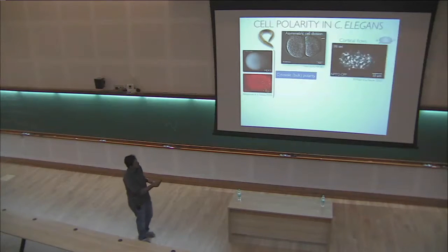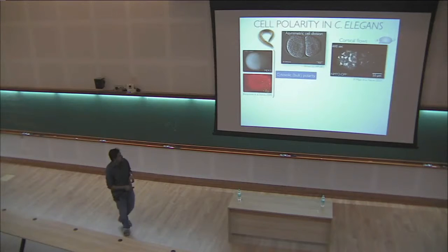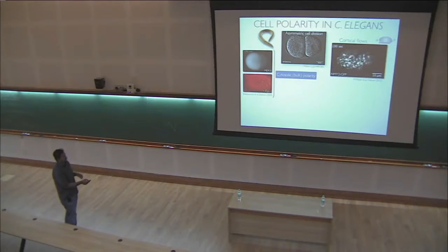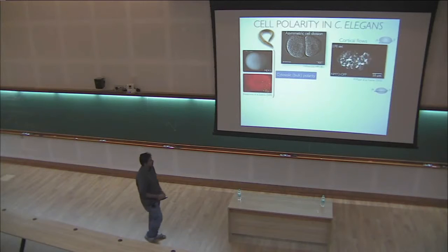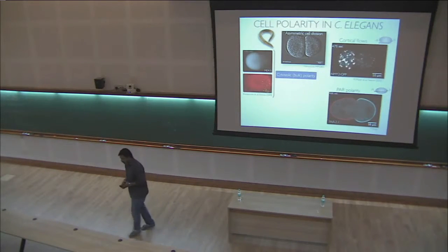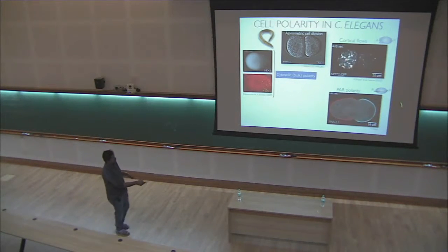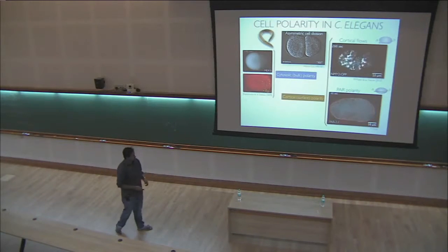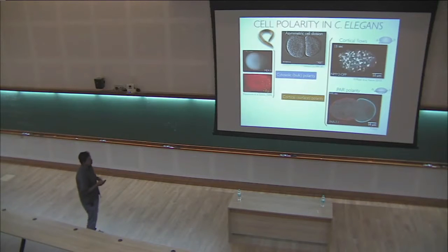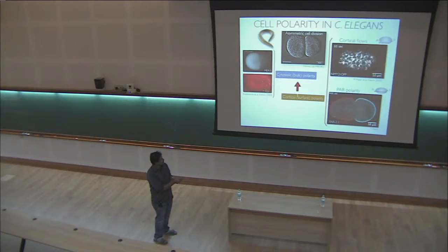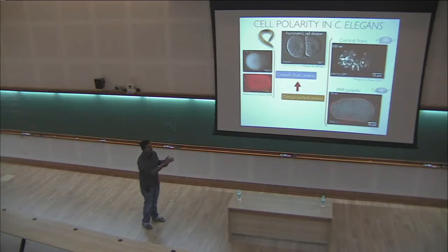At the surface of the cell there is a thin actin-myosin meshwork called the actin-myosin cortex. Looking at the bottom half in a confocal image with myosin labelled, you see flows happening on the surface — cortical flows. Myosin flows consistently from the right to the left side. At the same time, certain chemicals at the mid-plane establish a polarity pattern: starting from a uniform red surface, a blue patch appears, and finally a domain gets established. This surface polarity is what dictates polarity in the bulk.